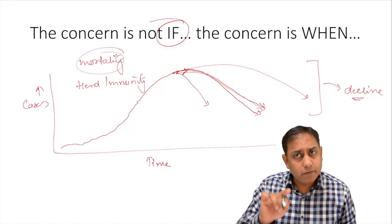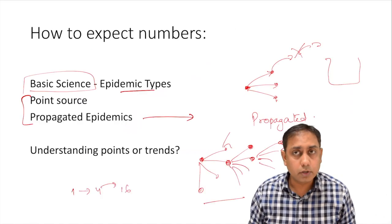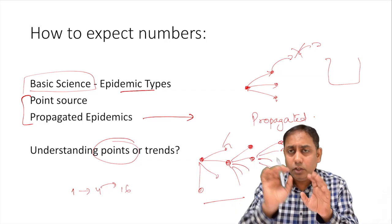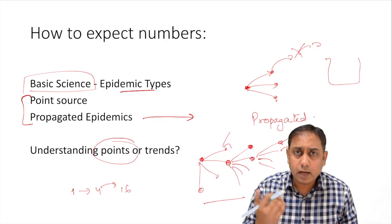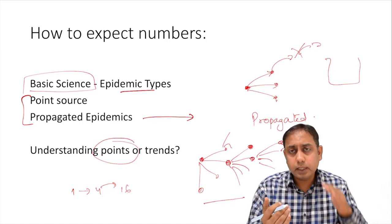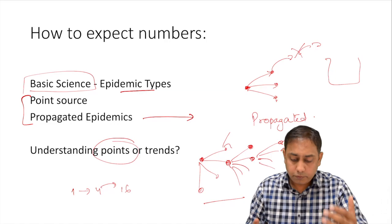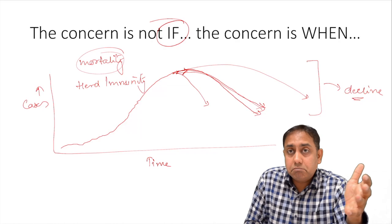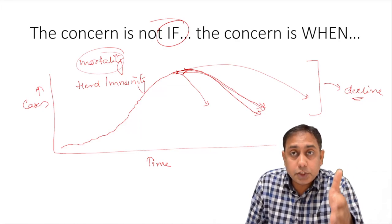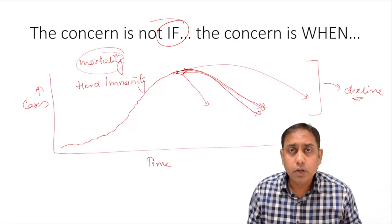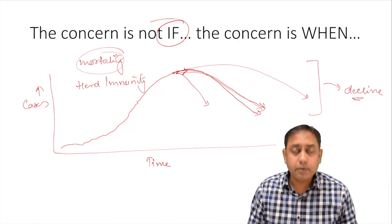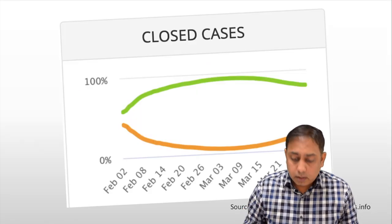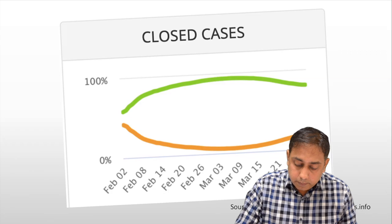Do not assess any country at a single particular point — you should have the capacity to understand the trend rather than the point. The curve is going to decline, but bending the curve is what epidemiology and preventive medicine teach us. That's the specialization of epidemiology and preventive medicine.